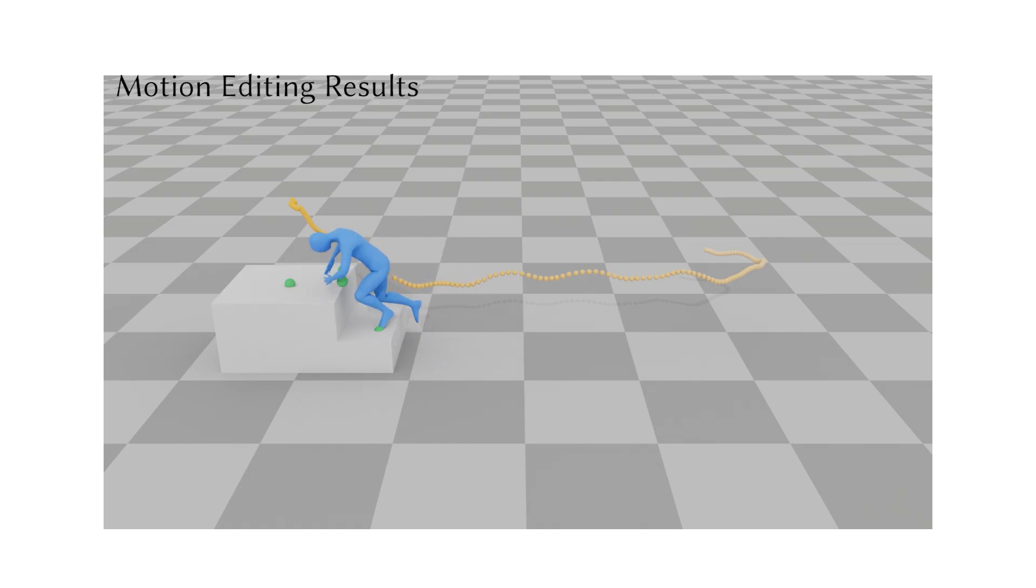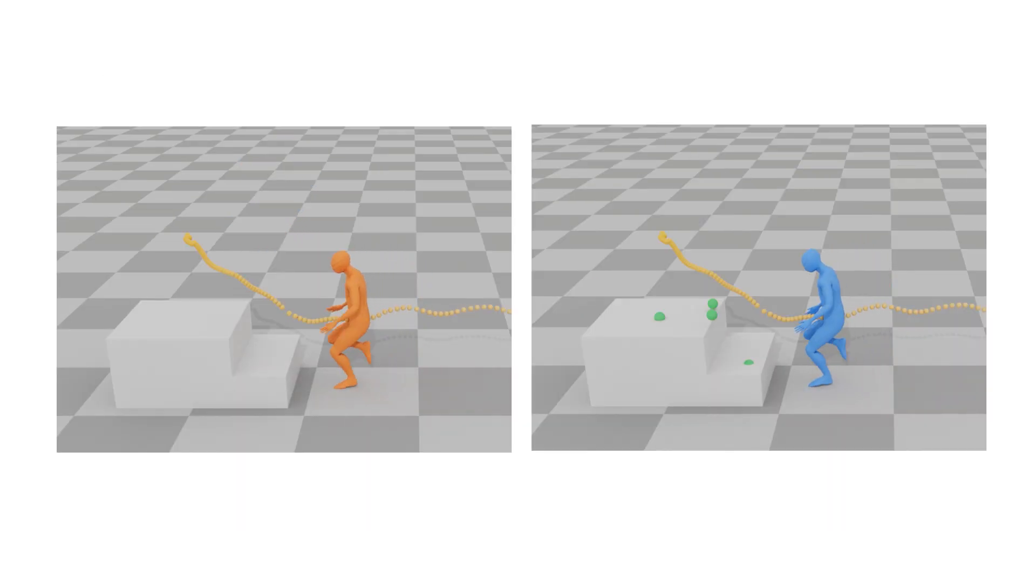This example demonstrates that our control paradigm enables a unique combination of global planning and precise local adjustments, significantly reducing the manual input required, particularly for long-term motions involving complex environmental interactions.